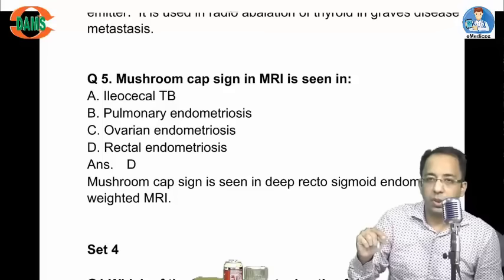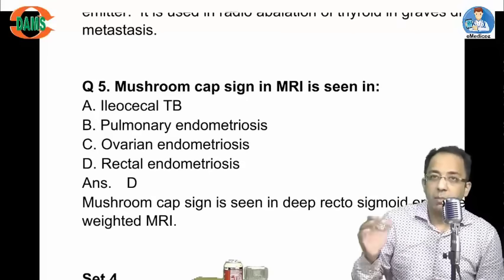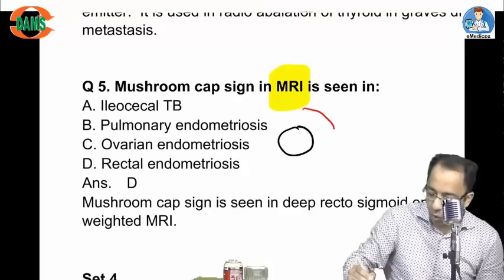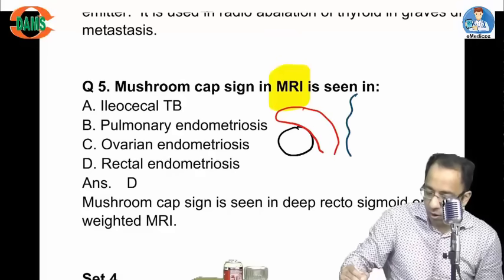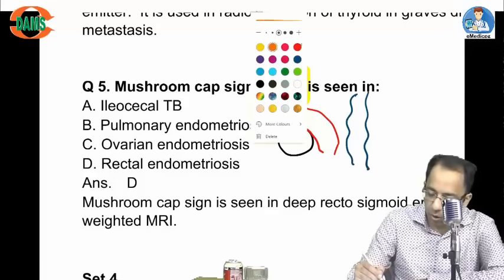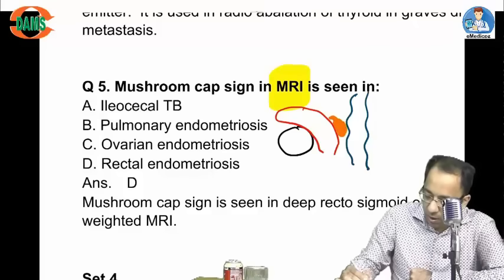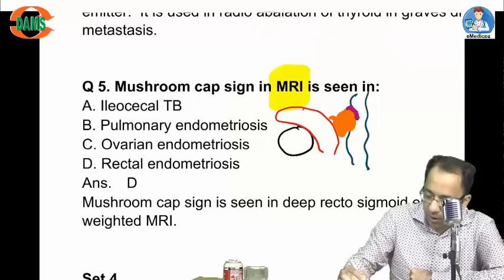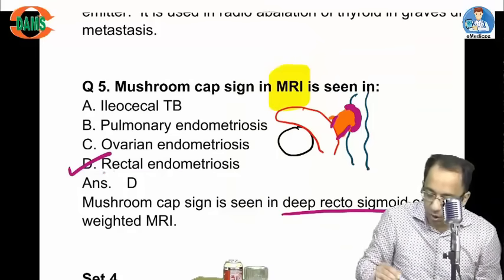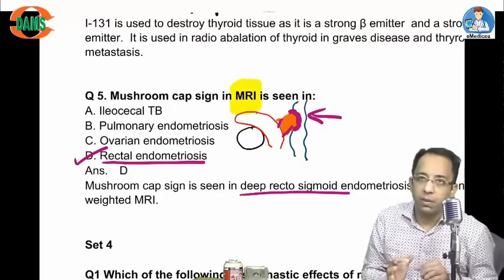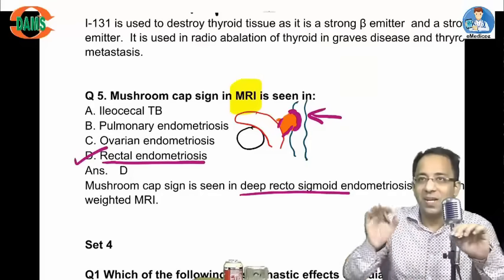Mushroom cap sign — some may think of pyloric stenosis, but in congenital hypertrophic pyloric stenosis it is seen on barium study. Here it is on MRI. If you have endometriosis in the recto-uterine pouch, it involves the recto-sigmoid area and the overlying mucosa appears like a mushroom cap. So mushroom cap sign on MRI is a sign of deep recto-sigmoid or rectal endometriosis.